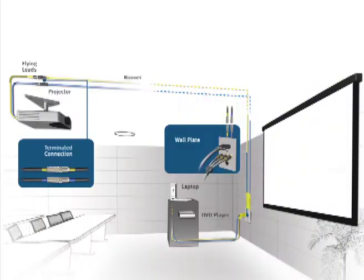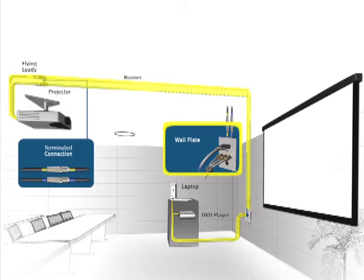Simply select the appropriate runner, wall plate, or flying lead, and with a twist and a turn, the termination is complete. It's just that easy. No more field termination.